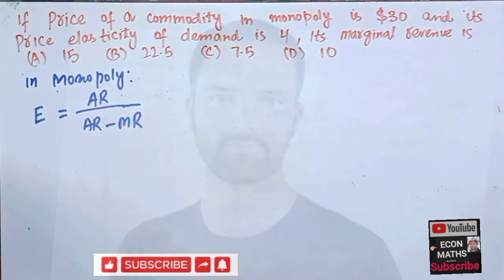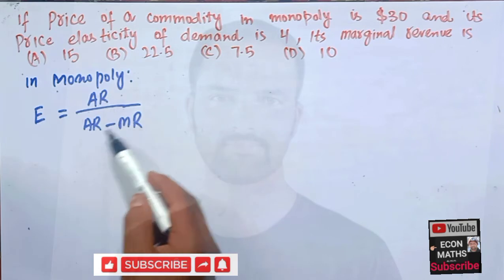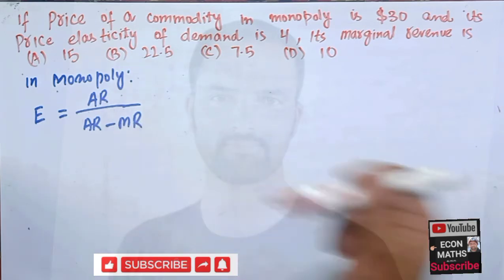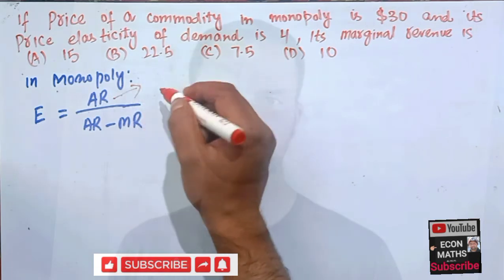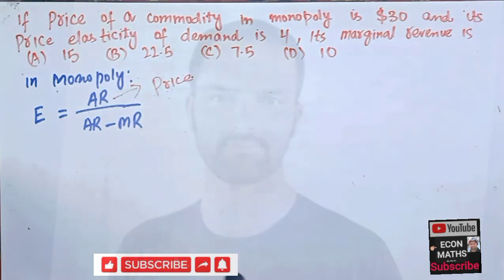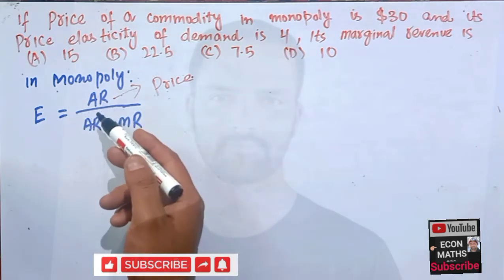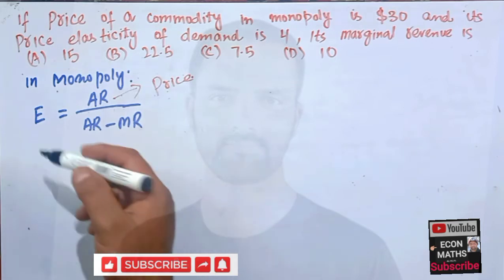What do we know about the average revenue? The average revenue is simply the price. That means our price elasticity of demand is given, or we can just rearrange it like this: if we reciprocate on both sides we have 1/E is equal to average revenue minus marginal revenue divided by average revenue.